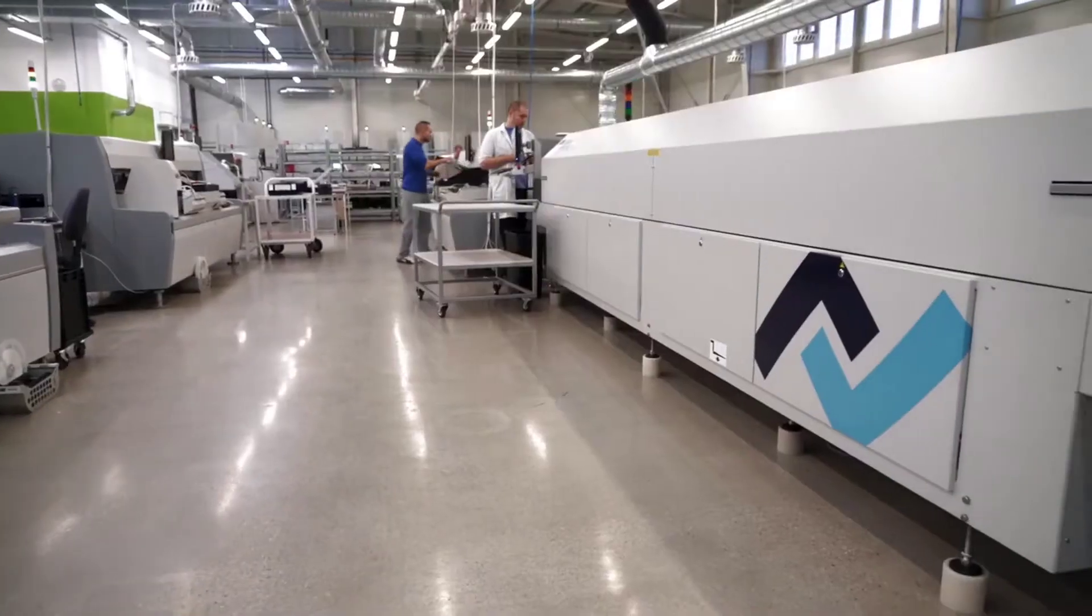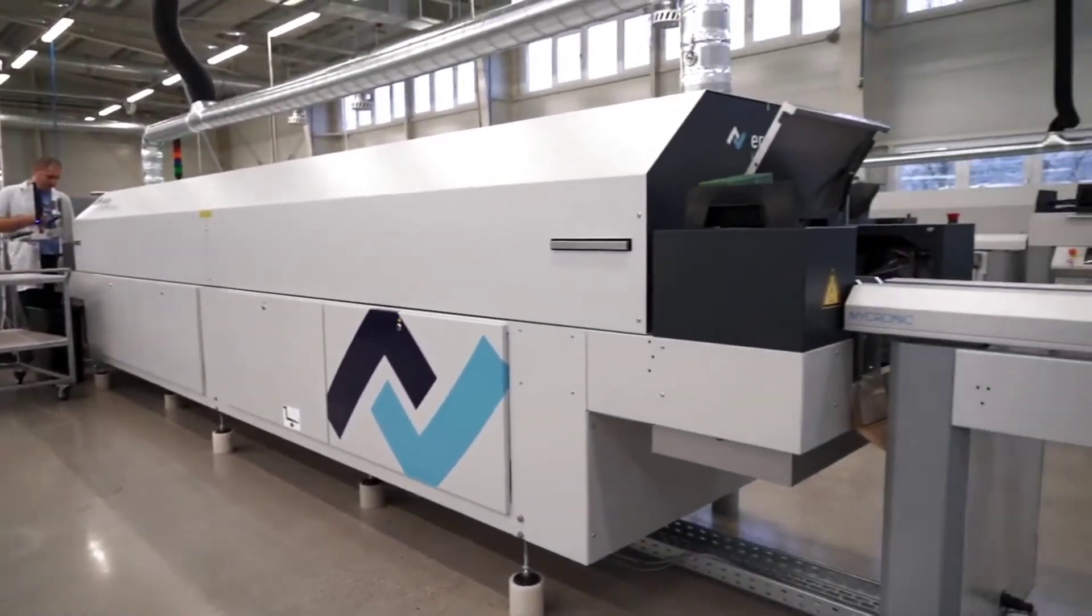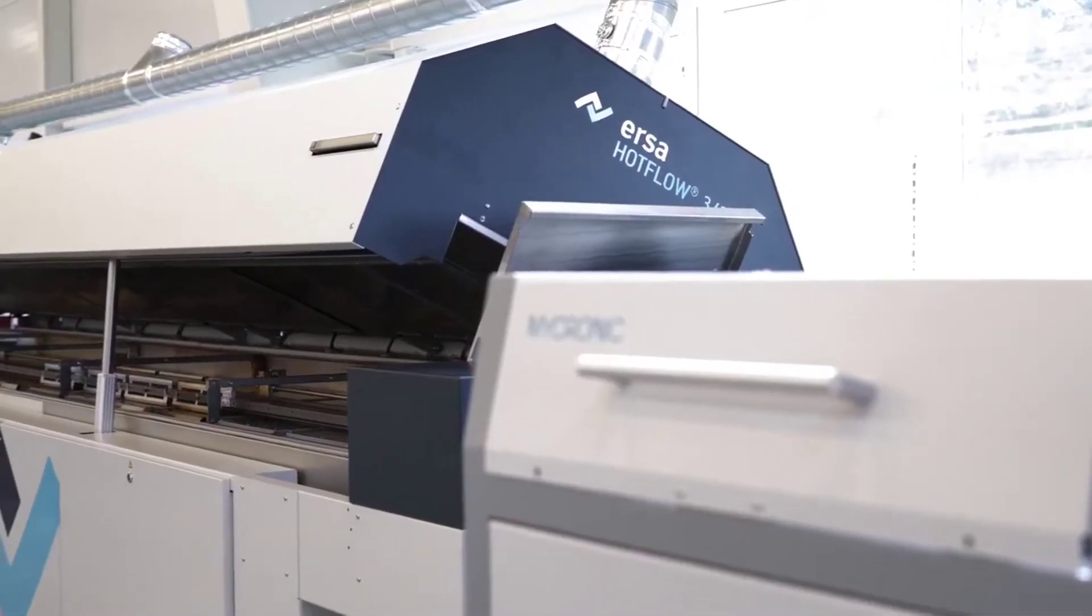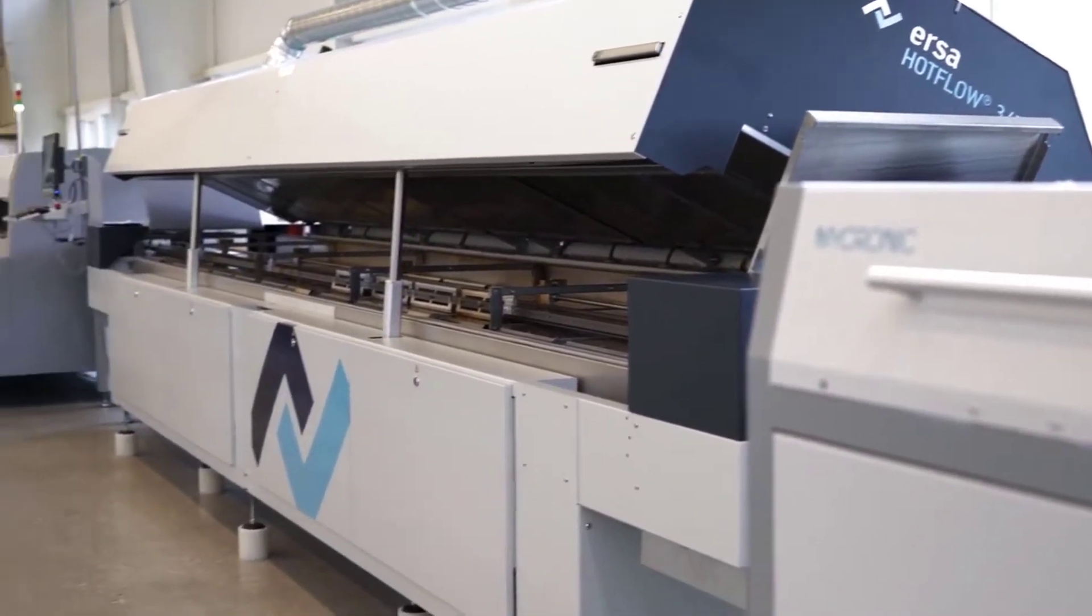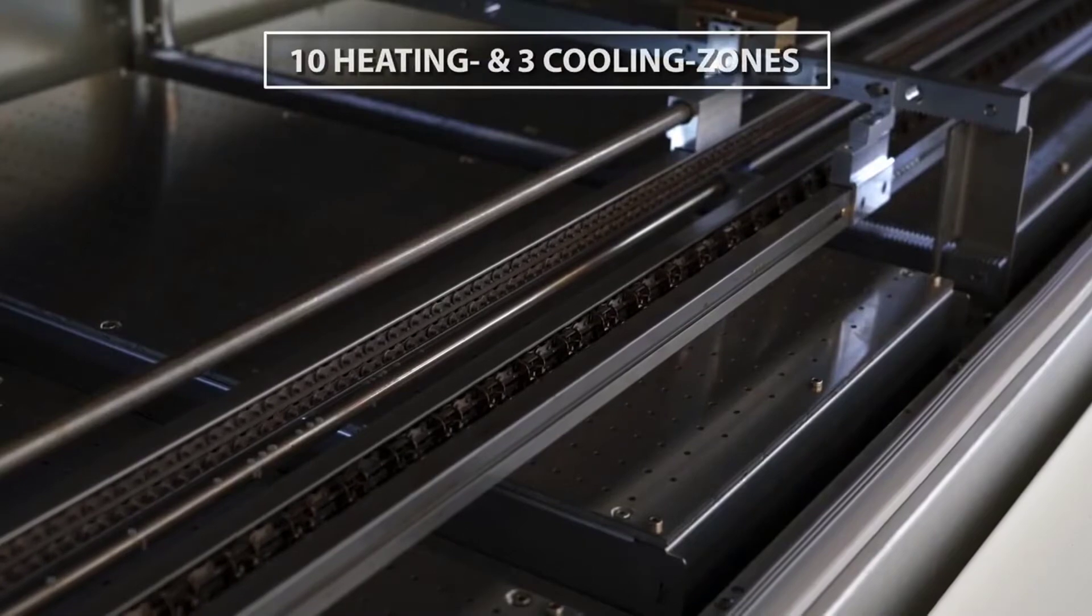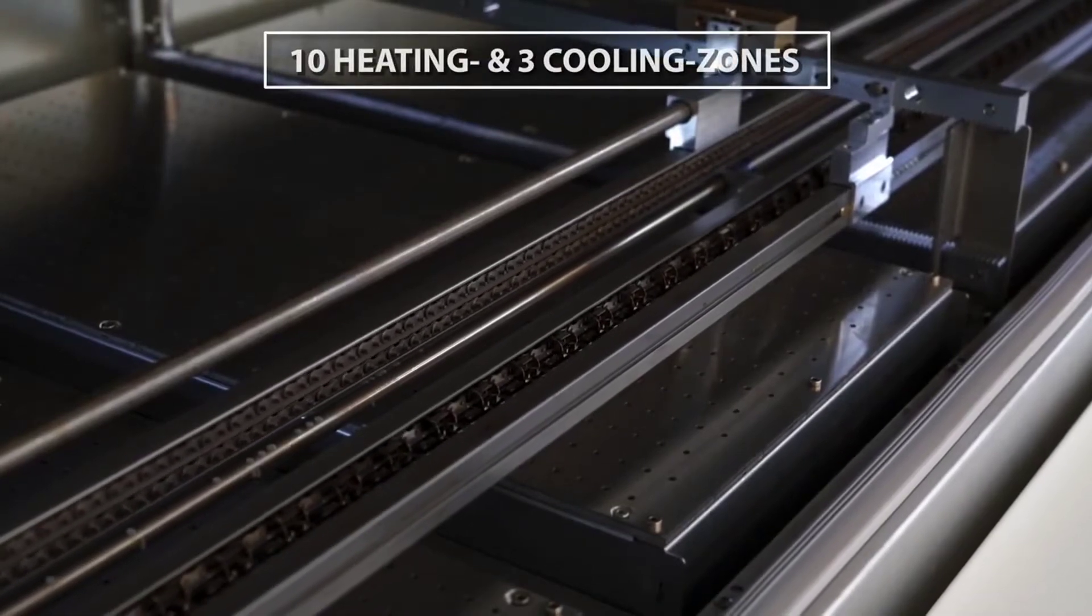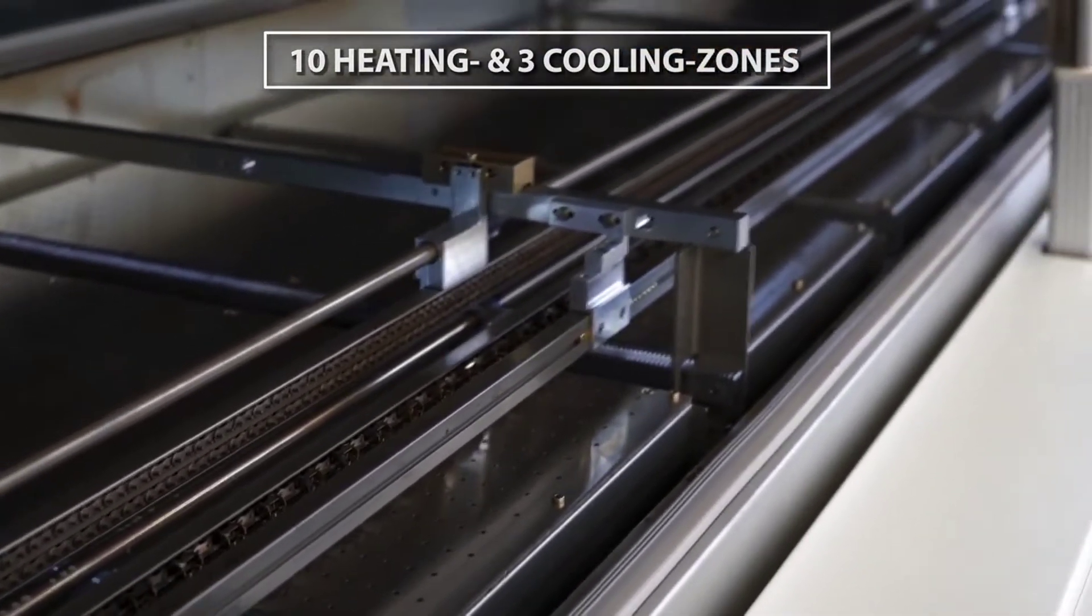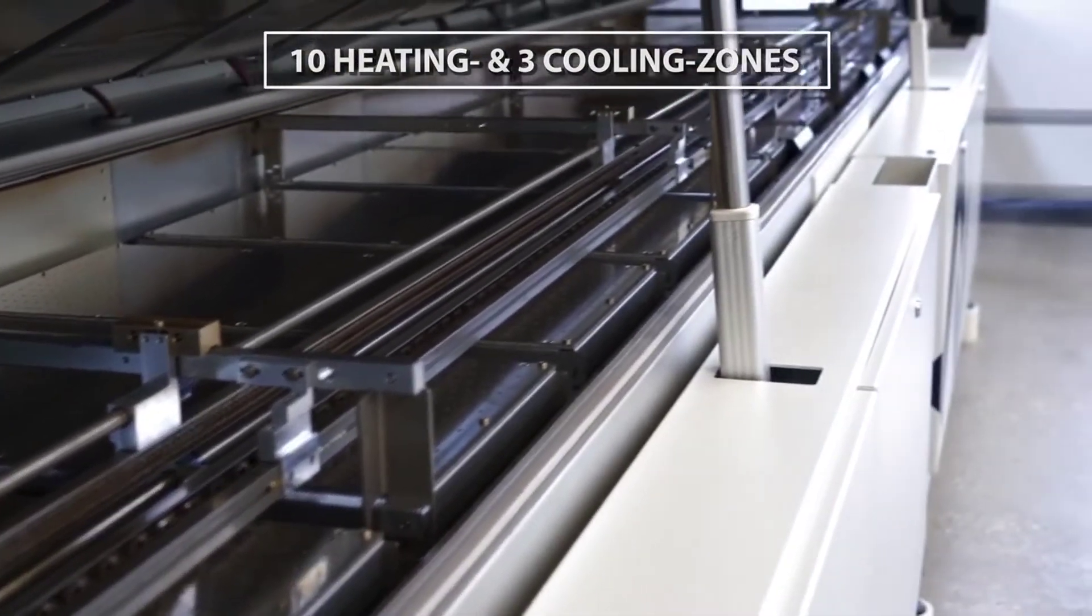We use Ursa hot flow ovens. These are long convection ovens with many heating zones that together create a soldering cycle. Each heating zone of the oven has a regulated temperature set by the reflow soldering profile for the assembly process.